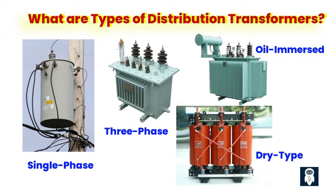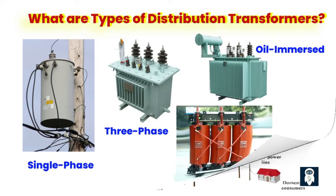Oil-immersed distribution transformers are filled with special insulating oil, which helps to dissipate the heat generated and provides extra insulation. They are designed to be safe and effective. In contrast, dry-type distribution transformers skip the oil and instead rely on solid insulation materials, such as epoxy resin, to keep things cool and prevent any mishaps. These transformers are favored in areas where fire safety is a top priority, like hospitals, schools, and shopping malls.